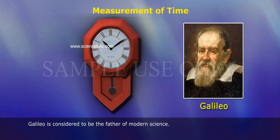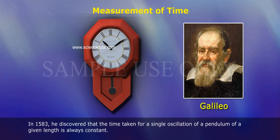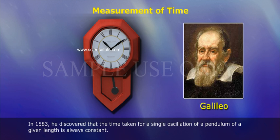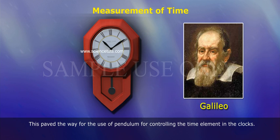Galileo is considered to be the father of modern science. In 1583, he discovered that the time taken for a single oscillation of a pendulum of a given length is always constant. This paved the way for the use of the pendulum for controlling the time element in clocks.